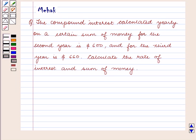Hello and welcome to the session. In this session we are going to discuss the following question. The compound interest calculated yearly on a certain sum of money for the second year is $600 and for the third year is $660. Calculate the rate of interest and the sum of money.